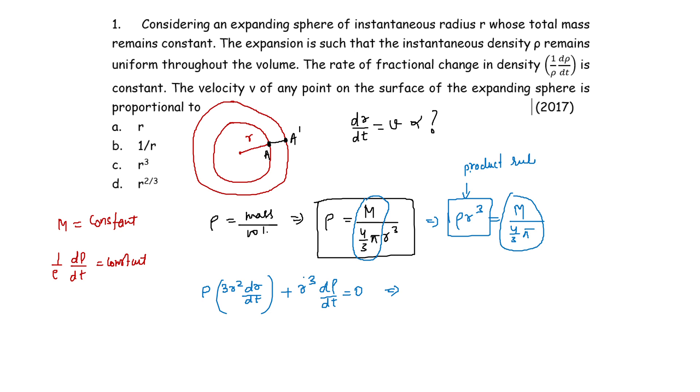This implies we can take this term to the right-hand side, and then this will become negative. So 3ρ r² dr by dt equals minus r³ dρ by dt. We can find out dr by dt, which is velocity, so I will directly write this as V,